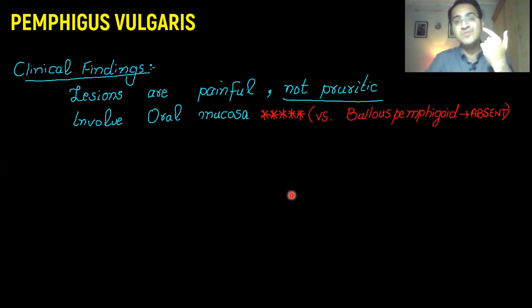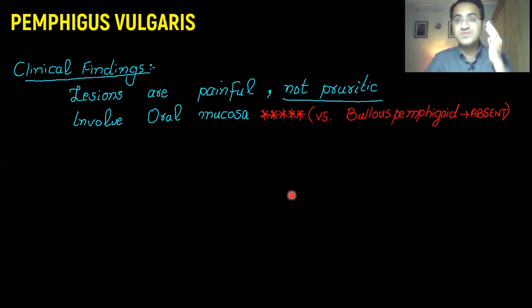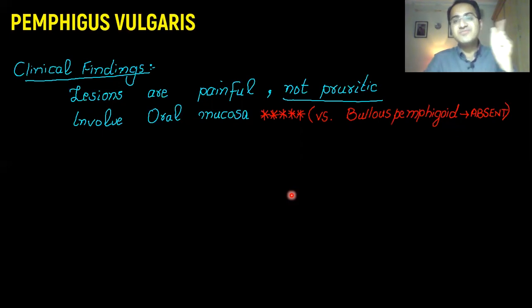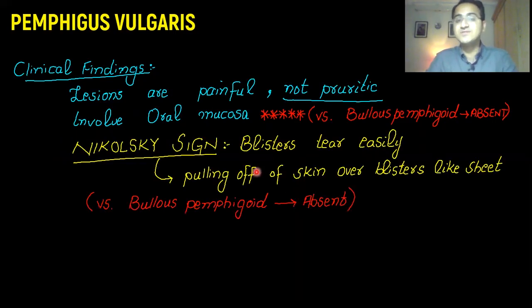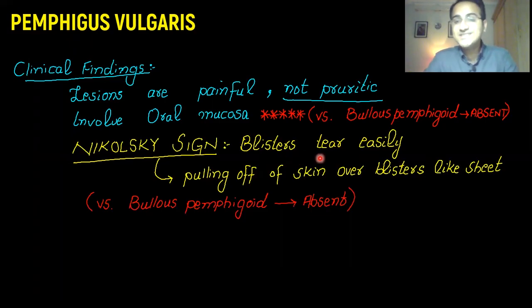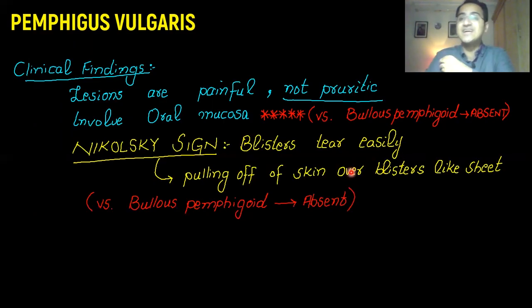These lesions involve the oral mucosa, unlike bullous pemphigoid — as discussed in our video on bullous pemphigoid, bullous pemphigoid rarely involves the oral mucosa. On the contrary, Pemphigus vulgaris involves the mucosa most of the time. There is a specific sign called the Nikolsky sign: the blister tears very easily — whenever you scratch the skin, the skin pulls off over these blisters like a sheet and they rupture.